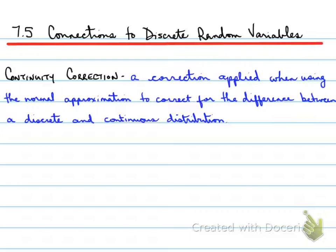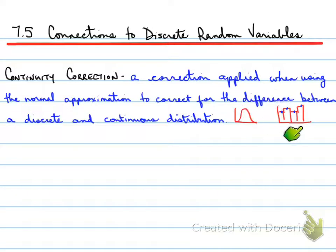What this is saying is that normally when we have a continuous function, we can determine information for probability. But when you have a discrete function, there would be a histogram involved where the values are not continuous. What happens is you can use the information we know about continuous distributions for discrete random variables by finding the midpoints and using a normal approximation to the curve to find out the information that we need.